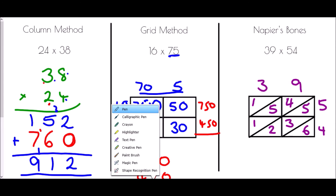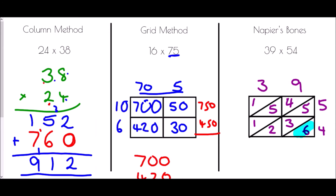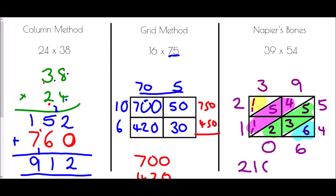Then we look down the diagonals. The first diagonal is a 6. The second diagonal is 5 plus 3 plus 2, which is 10 — write the 0 and carry the 1 into the next diagonal. The next diagonal is 5 plus 4 plus 1 plus 1 (carried), which is 11 — write the 1 and carry 1. The final diagonal is 1 plus 1, which gives 2. So 39 times 54 is 2,106.